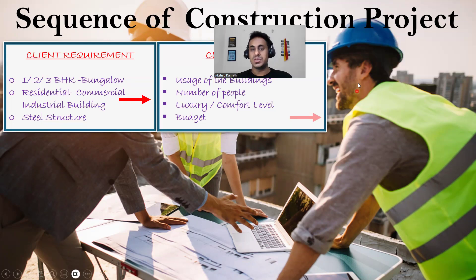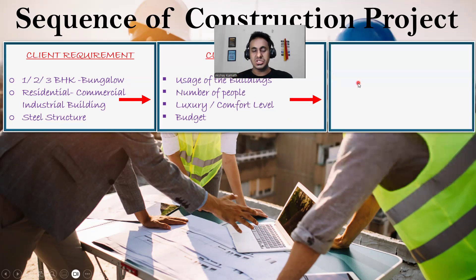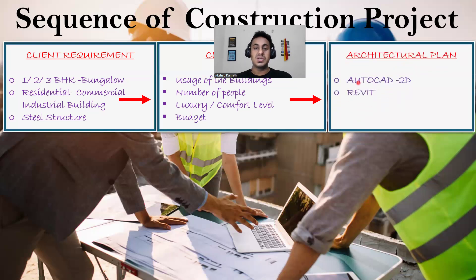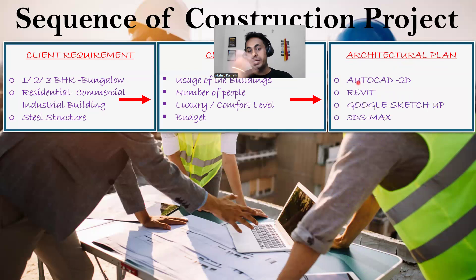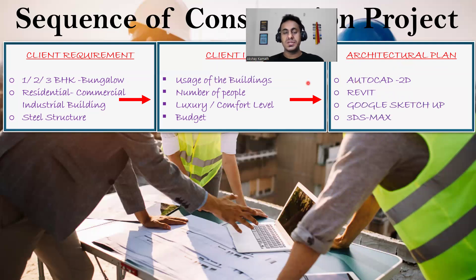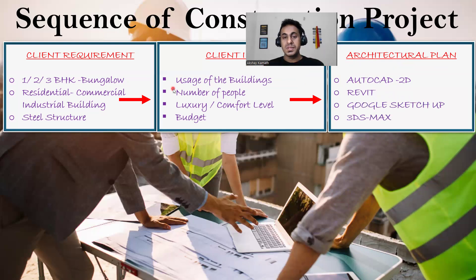We do a rough sketch on paper first. Once that rough sketch is done, only then we'll use software like AutoCAD 2D, Revit, Google SketchUp for 3D elevations, or 3DS Max. Before using any software, the plan and space planning should come in your mind — the software is never going to do all these things for you.